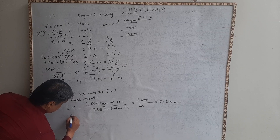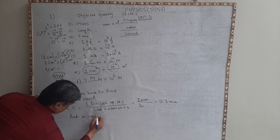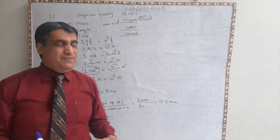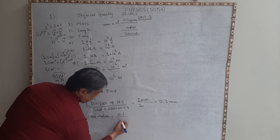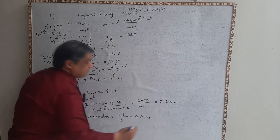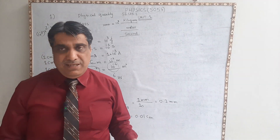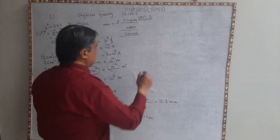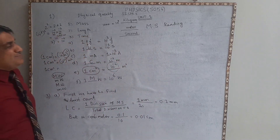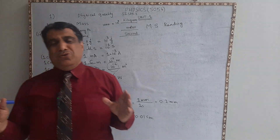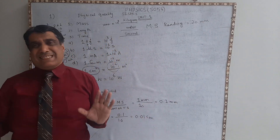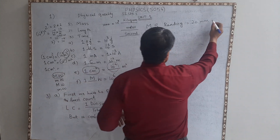We need the least count in centimeters. So 0.1 mm divided by 10 equals 0.01 centimeter. This is the least count of the Vernier caliper. Now, looking closely at the main scale reading of that Vernier caliper — as I told you to observe — that is equal to 20 millimeters, which equals 2 centimeters.